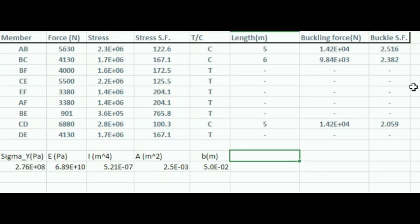To calculate the safety factor for members in compression due to buckling, you can take the buckling force and divide it by the applied force in each member given the load.